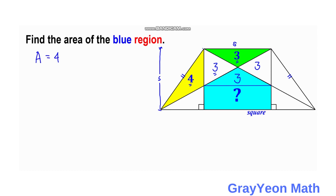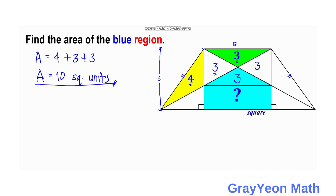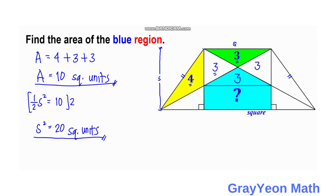The area is equal to 4 plus 3 plus 3 plus 3 plus 3 plus 3, which equals 10 square units. Notice that the area is actually one half of the square. So if we want to get the area of the square, we multiply by 2, giving us a square area of 20 square units.